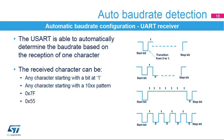The USART receiver is able to detect and automatically configure the baud rate based on the reception of any one of the following characters. The received character can be any character starting with a bit at one; in this case, the USART measures the duration of the start bit from falling edge to rising edge. Any character starting with a 10XX pattern; in this case, the USART measures the duration of the start and of the first data bit from falling edge to falling edge, ensuring better accuracy in the case of slow signal slopes. A 0x7F character frame, where the baud rate is updated first at the end of the start bit, then at the end of bit 6. Or a 0x55 character frame, where the baud rate is updated first at the end of the start bit, then at the end of bit 0, and finally at the end of bit 6.